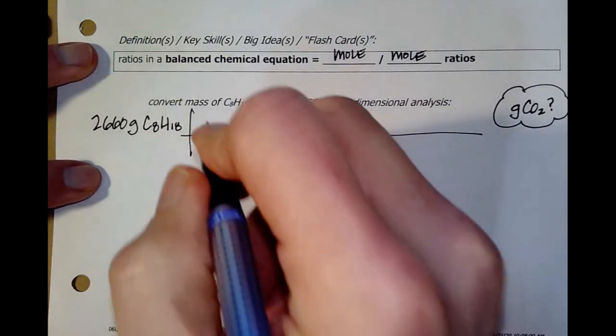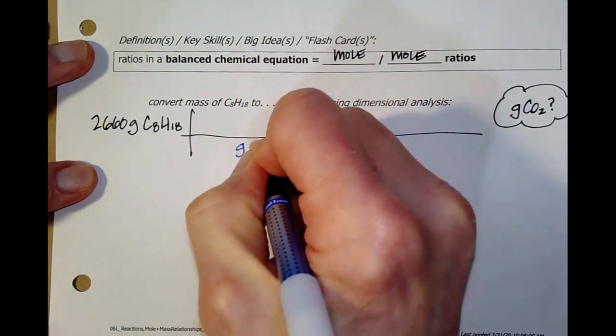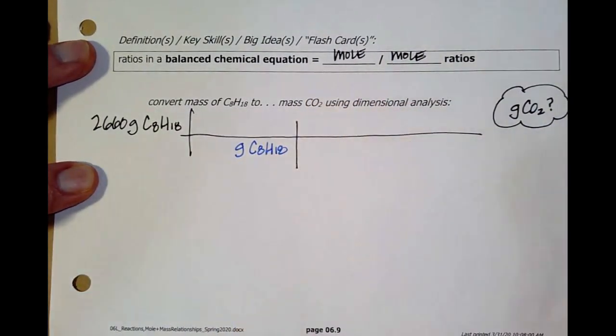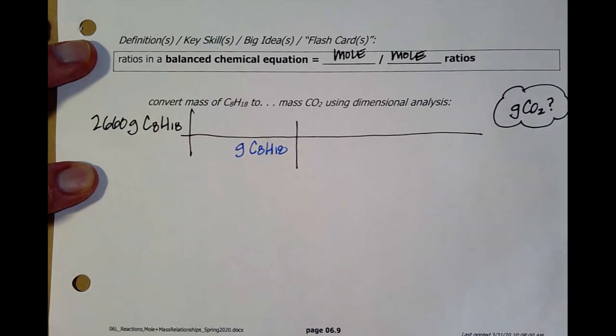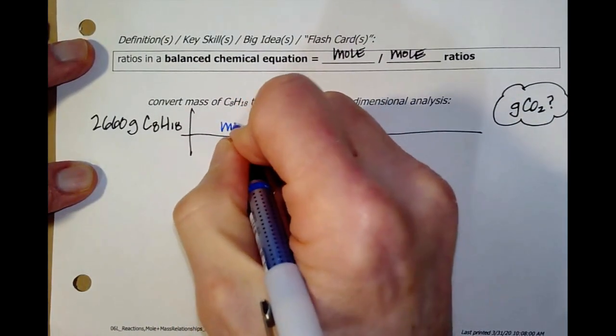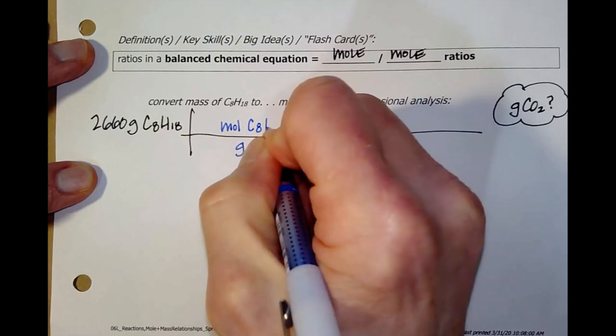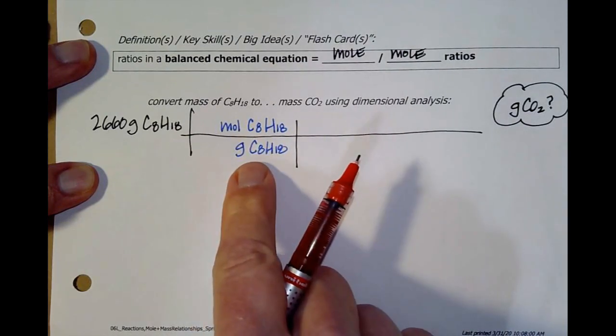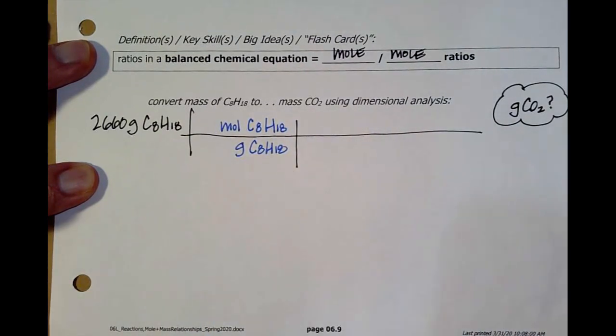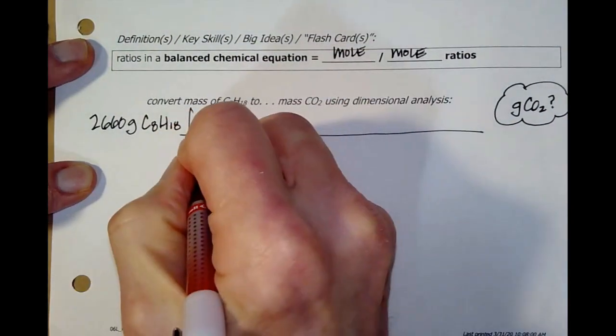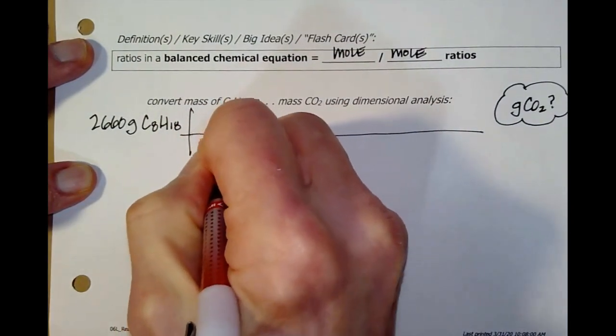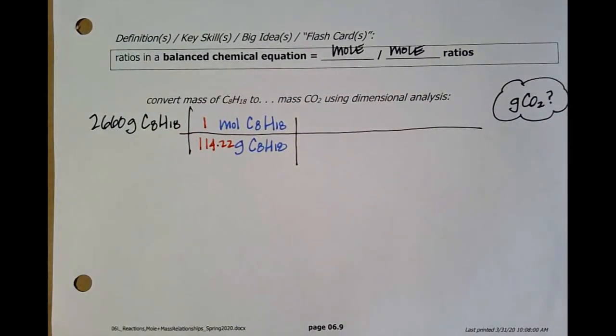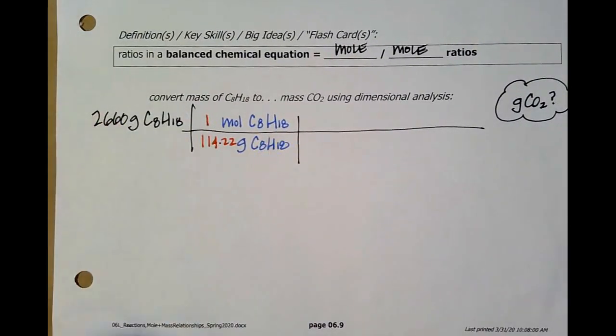So, I might just start off and say, well, I don't know. I've got to cancel the grams of C8H18 somehow. Well, the only thing I know is grams per mole. So, I might say, well, one mole of C8H18. Now, at the top of this page, I've given it to you. We could add up eight carbons, 18 hydrogens and get there. But I say, oh, at the top of the page you gave it to us, it's 114.22 for every one mole of C8H18. Okay, well, that got rid of grams, but now I've got moles of this C8.